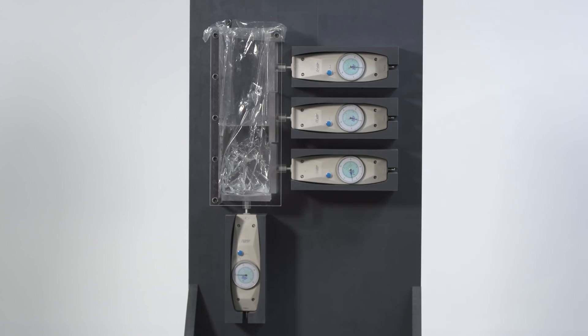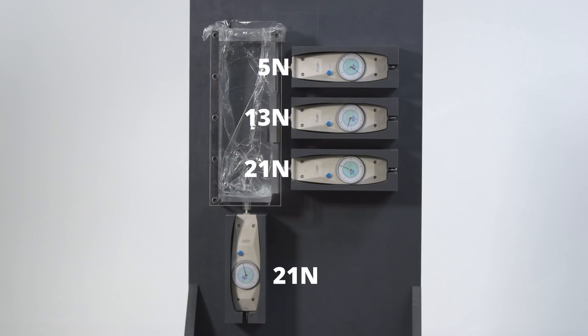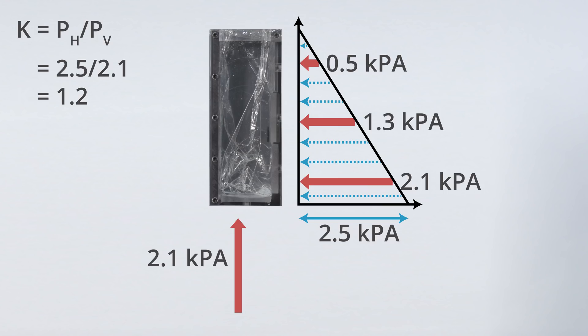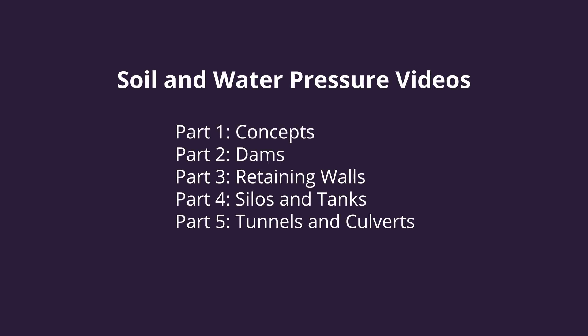If we fill the chamber with water, the gauges again indicate a linear pressure distribution. To see how the pressures described in this video affect the design of real-world structures, we hope you will watch our videos on dams, retaining walls, silos and tanks, and tunnels and culverts.